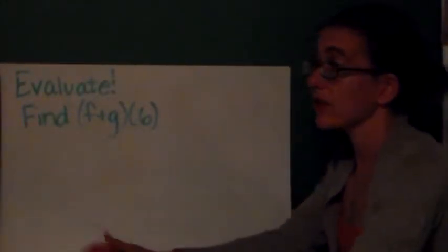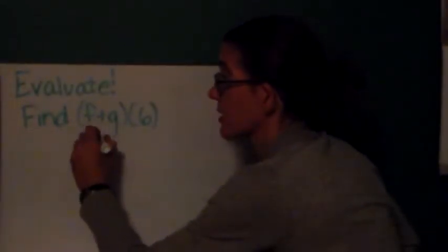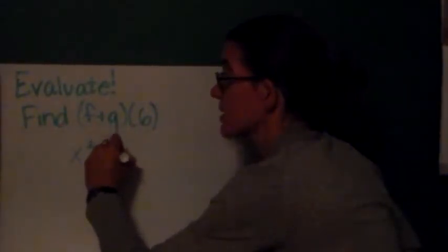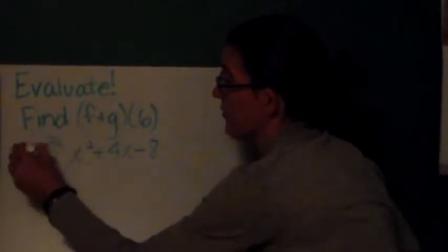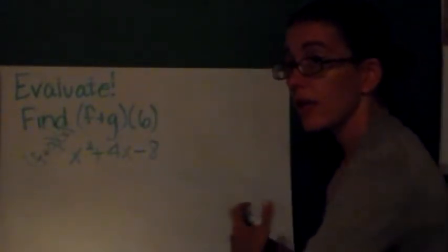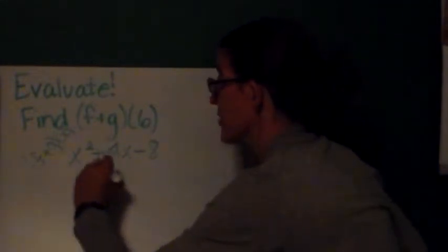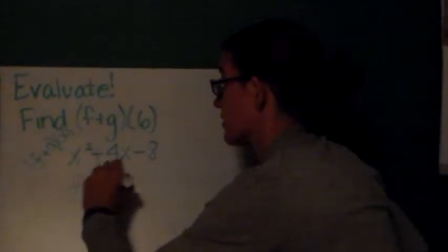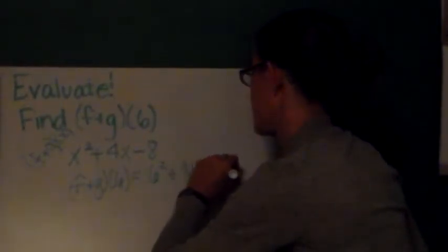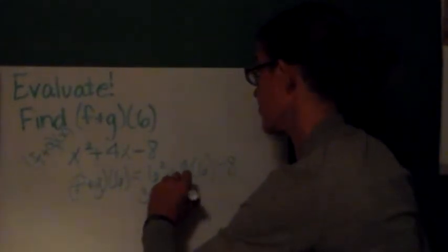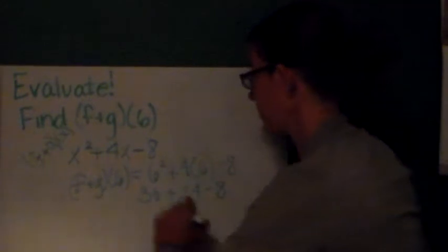Finally, we can evaluate. So, previously we had found that (f+g) was equal to x² + 4x - 8. So, this is (f+g)(x). Well, if I want to find (f+g)(6), now I can just substitute 6 into these. New equation. So, I'm going to evaluate (f+g)(6). And that's going to be equal to 6² + 4 times 6 - 8. Or, 36 + 24 - 8. So, overall I have 60 - 8. My final answer is 52. (f+g)(6) is 52.